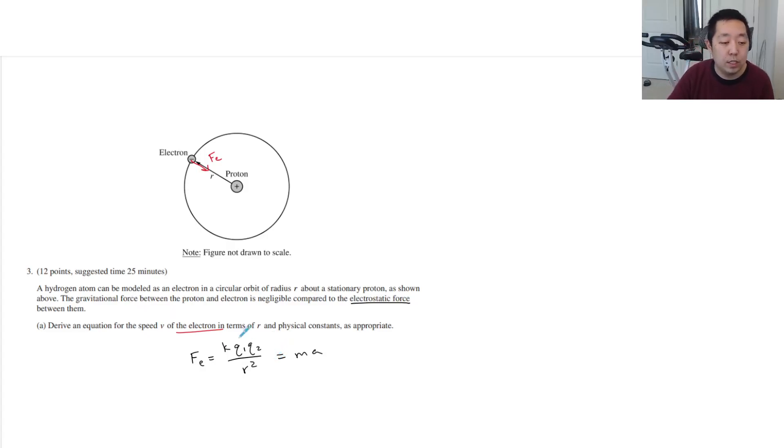Net force equals ma. In this case, it's centripetal, so it's mv squared over r, right? Moving in a circular path. So what are the charges? This is going to be k q electron squared, right? Because the proton and electron have the same charges, they're opposite charges, but I specified the direction with this, so you don't need to make it negative. Divided by r squared is equal to mass of the electron.